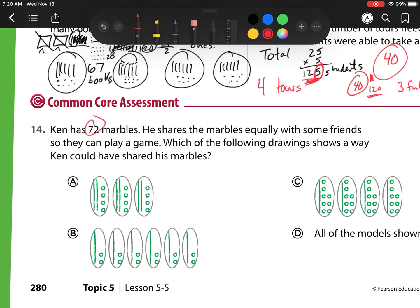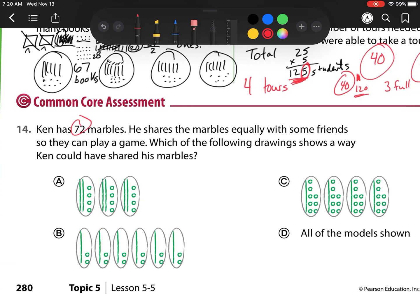Ken has 72 marbles. He shares the marbles equally with some friends so they can play a game. Which of the following drawings shows Ken having shared his marbles? Well, it doesn't tell me how many friends he's playing with, so what I have to figure out is does it equal this 72? So let's check. Here I have three groups of 10, 20, 21, 22, 23, 24. So let's check. That is 72, so I can mark this one. But I need to check all of them because this last tricky one right here is all of the models shown. So I have to check to see. So here I have 10, 20, 30, 40, 50, 60, plus 1, 2, 3, 4, 5, 6, 7, 8, 9, 10, 11, 12. Which, hey, that also equals 72.